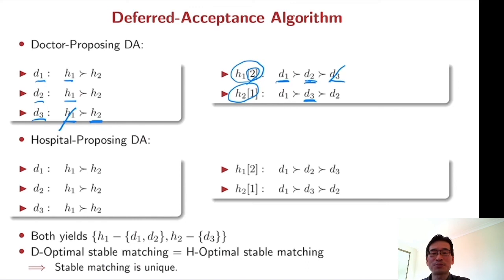If we use hospital proposing algorithm, H1 chooses two doctors. H1 offers D1 and D2 and H2 offers to D1. And now D1, since the doctor has got two offers, rejects H2 and H2 rejected from D1 makes an offer to D3. And now that's the end of the algorithm.